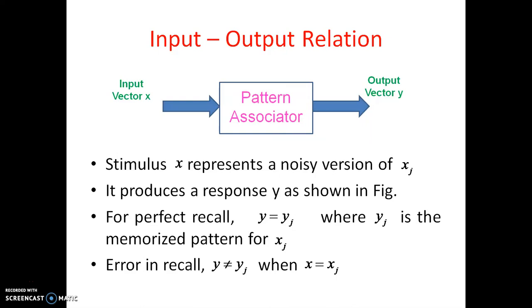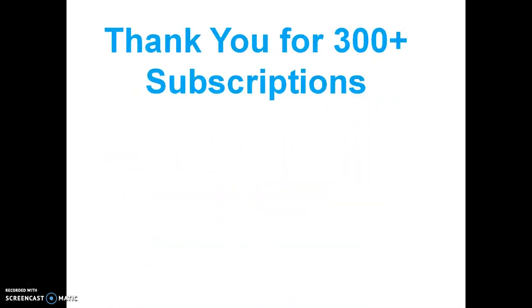To summarize: if xj is given, yj should come out; if x is given, y should come out. For perfect recall, y equals yj when x equals xj. If x equals xj but you are unable to get the same pattern — y is not equal to yj — that is an error in recall. These two cases are called perfect recall and error recall, completing the explanation of pattern association.